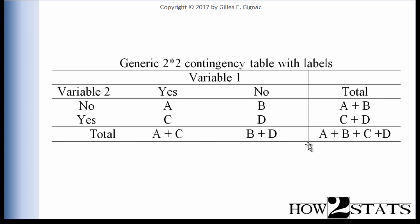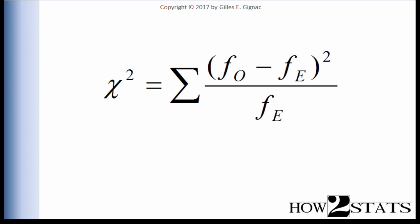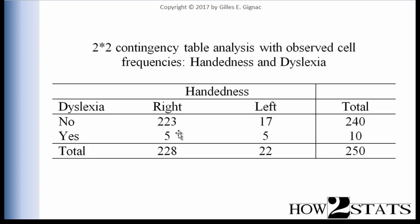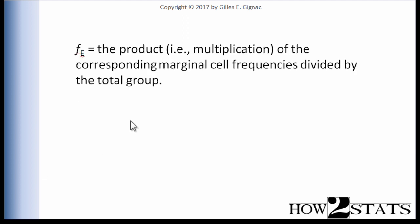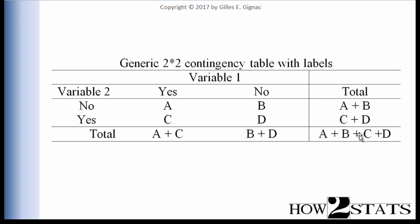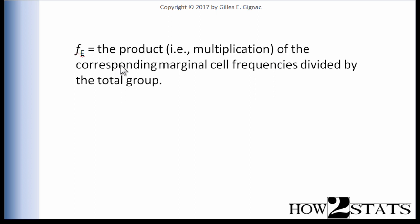How do we calculate the expected frequencies associated with cells A, B, C, and D? That is the basis of the Pearson Chi-Square formula — the difference between the observed and expected frequencies. The observed frequencies are easy to get; the expected cell frequencies are tougher. We multiply the corresponding marginal cell frequencies and divide by the total group, which is the sample size.